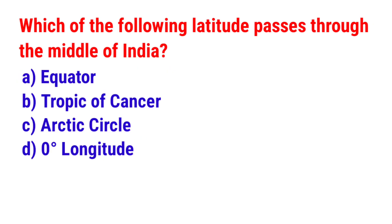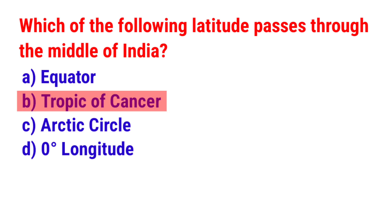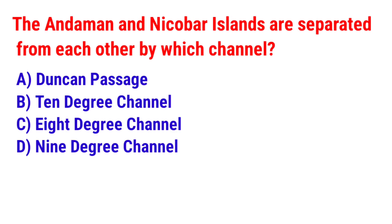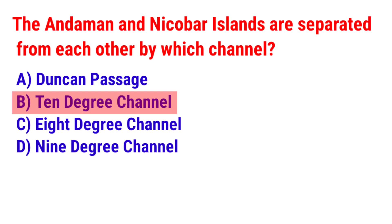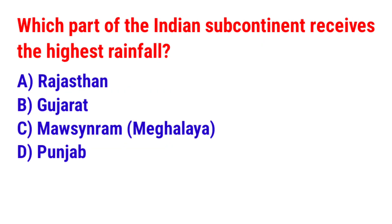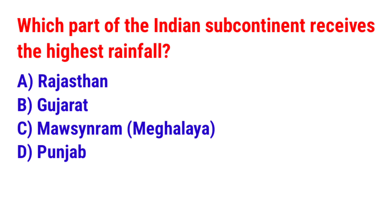Question 4: Which of the following latitudes passes through the middle of India? The answer is option B — Tropic of Cancer. Question 5: The Andaman and Nicobar Islands are separated from each other by which channel? The answer is option B — 10 Degree Channel. Question 6: Which part of the Indian subcontinent receives the highest rainfall? The answer is option C — Mawsynram.